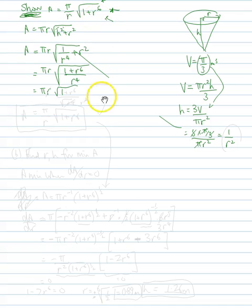So the square root of 1 over r⁶ divided by square root of r⁴, and that becomes r², one of those r's cancel, so you get π/r times √(1 + r⁶), ta-da! So that's what we're aiming for and that's what we get.